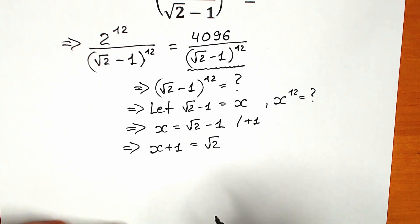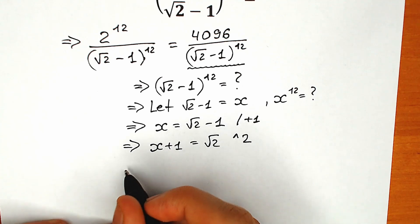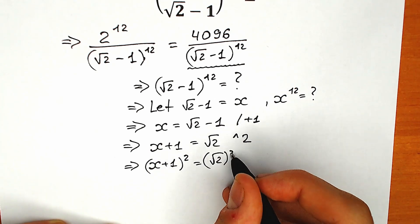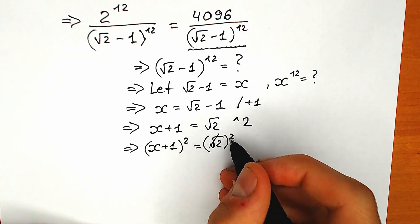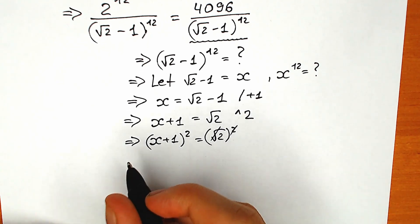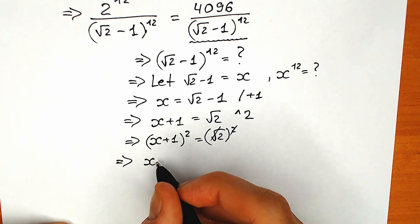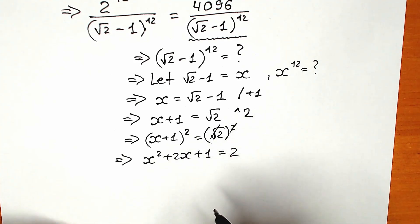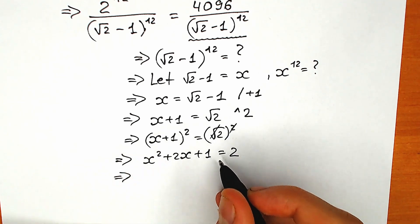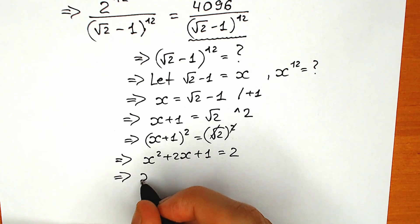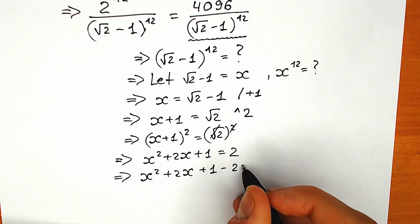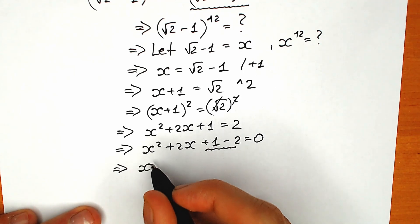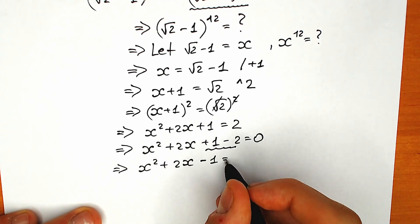Right now let's raise both sides to the second power. So we have x plus 1 raised to the second power equal to square root of 2 raised to the second power. We can cancel the square root with the power of 2 on the right side. Using our basic school formula for (x + y)², this gives us x squared plus 2x plus 1 equal to 2. Subtracting 2 from both sides: x squared plus 2x plus 1 minus 2 equals 0, so x squared plus 2x minus 1 equals 0.